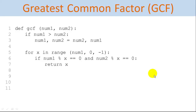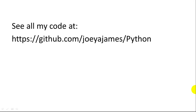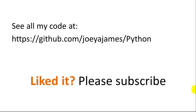It's a pretty simple for loop and an if check. We can test this by assigning num1 equals 18, num2 equals 204, then call our function and print out the result. That wraps it up for the Greatest Common Factor video. I hope this was helpful. You can see all of my code on my GitHub site at this address. If you like this video, I hope you'll subscribe. I welcome any comments. I'm Joe James, thanks for watching.